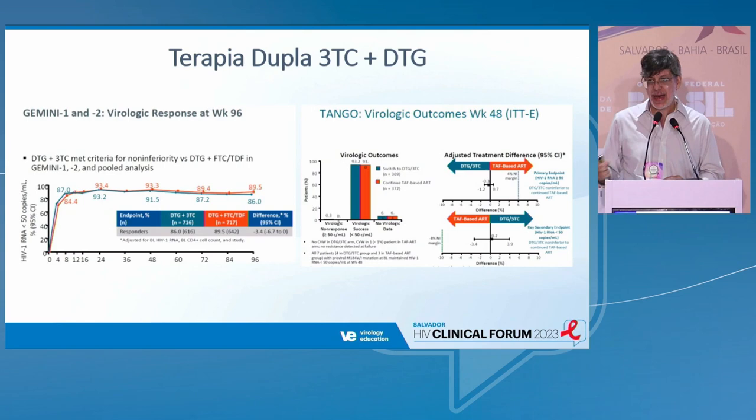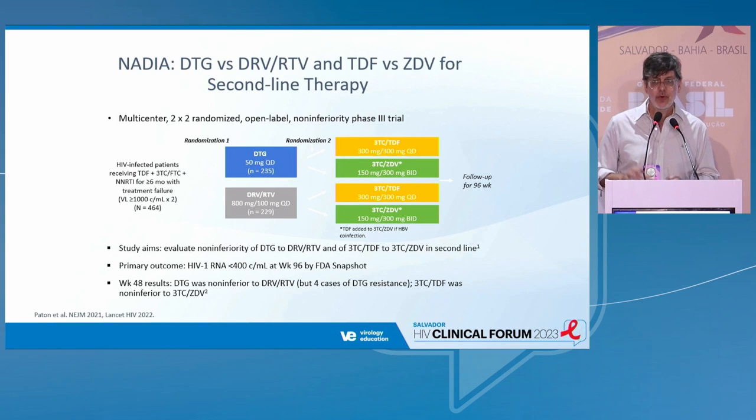The evidence has already shown the benefit of lamivudine and dolutegravir for patients with no history of previous virological failure. But for patients with a history of virological failure, it's different — there is a certain concern.